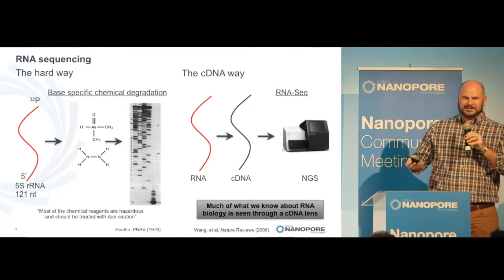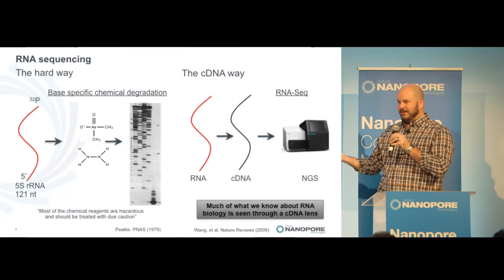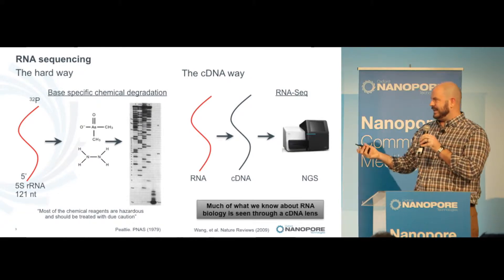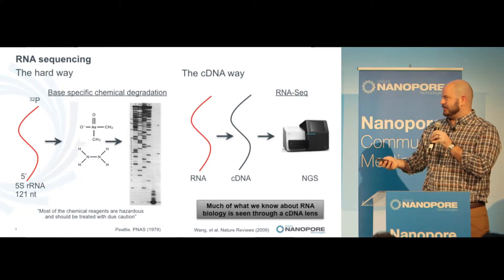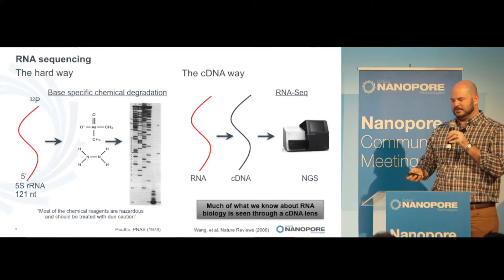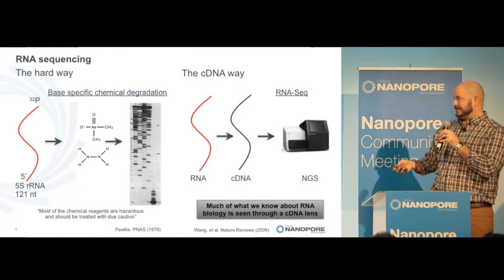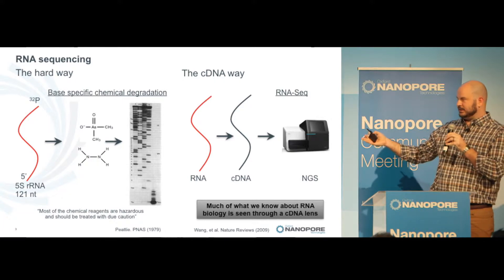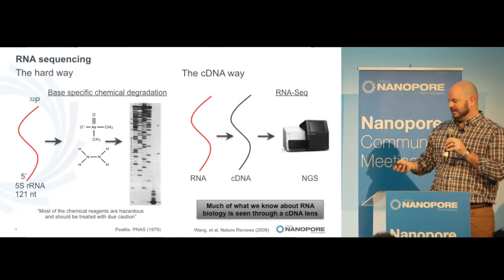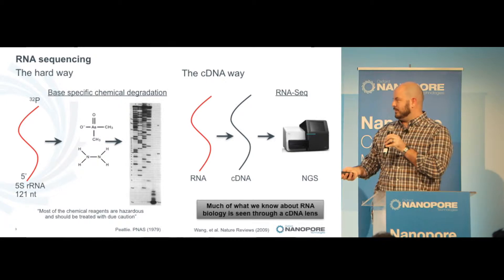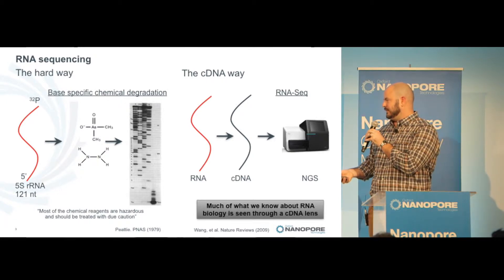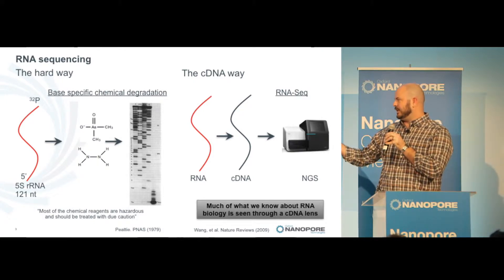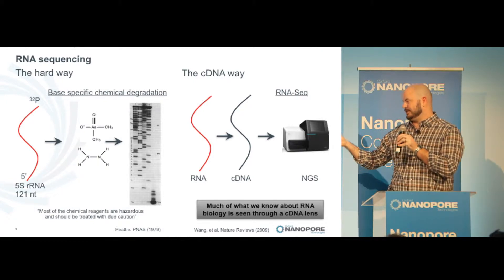To appreciate direct RNA sequencing, we go back to RNA sequencing the hard way back in 1979, where radio-labeled RNA undergoes base-specific chemical degradation and resolution by chromatography. While this technically is direct RNA, it's a short-read technology and extremely labor-intensive. The authors themselves warn that most of the chemical reagents are hazardous. This is obviously an arsenic-containing compound, and that's hydrazine, which is a monopropellant.